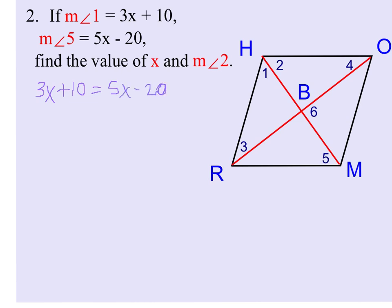I'm going to solve this for x. So subtract 3x on both sides. We get 10 equals 2x minus 20. I'm going to add 20 to both sides. So we get 30 equals 2x. And when we divide, we end up with the answer of x equals 15.